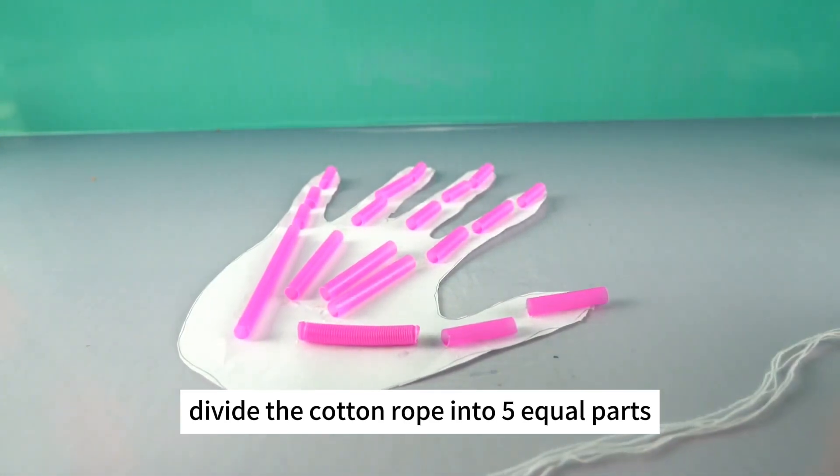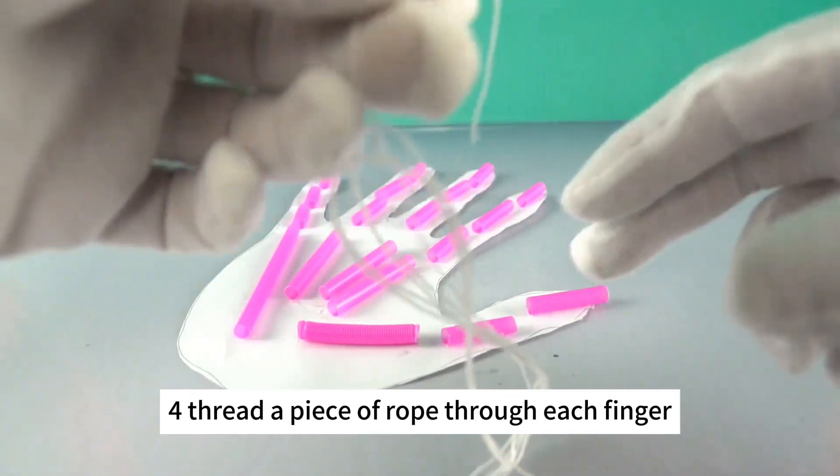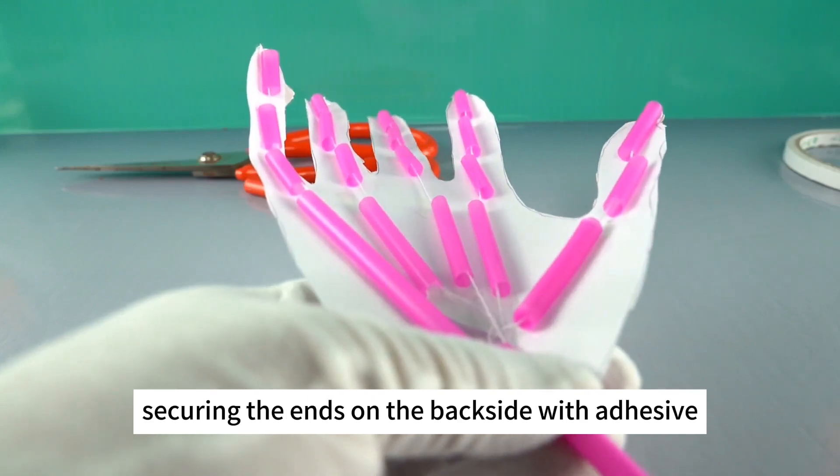Divide the cotton rope into five equal parts. Thread a piece of rope through each finger, securing the ends on the backside with adhesive.